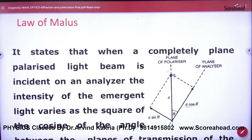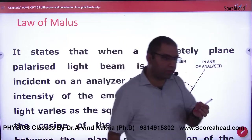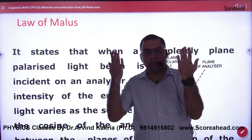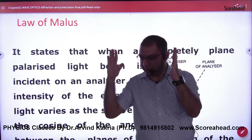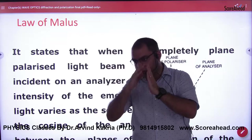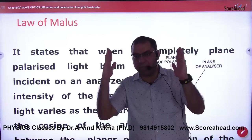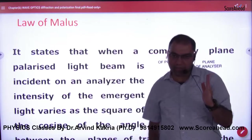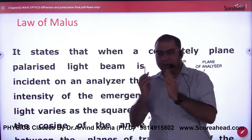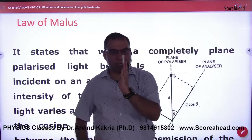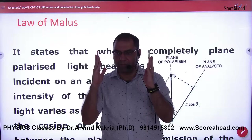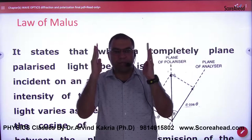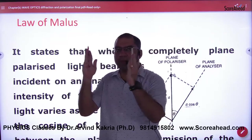Suppose you have two polarizers and one analyzer identical. My hand is a polarizer and one analyzer. Two are parallel and this is an axis. I keep this in front of you. Look, you will see the diagram. This is a polarizer and this is an analyzer. So you don't see the diagram like this — you look at it like this.